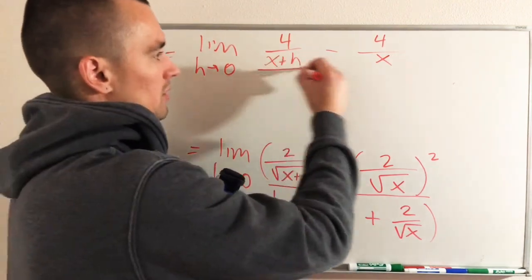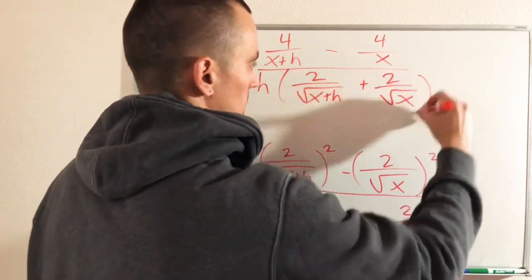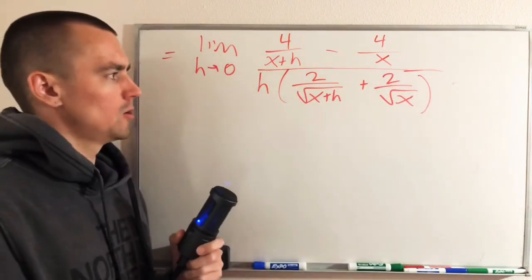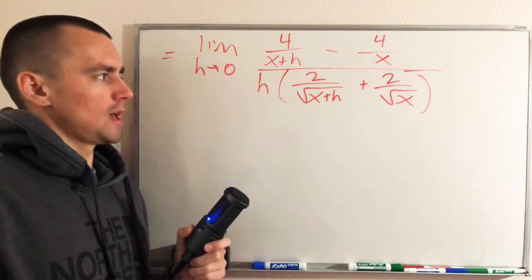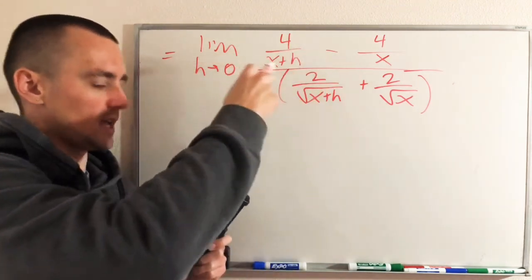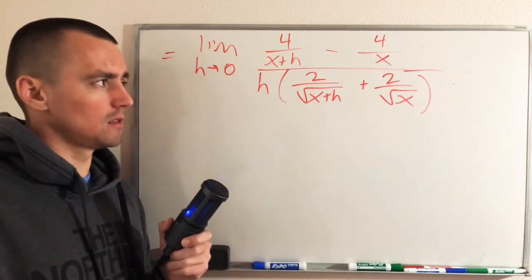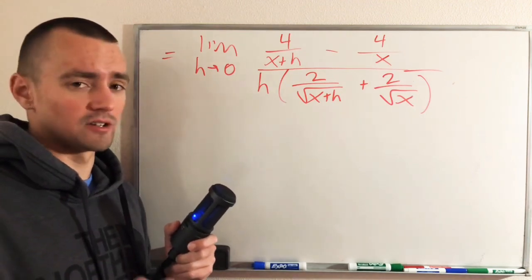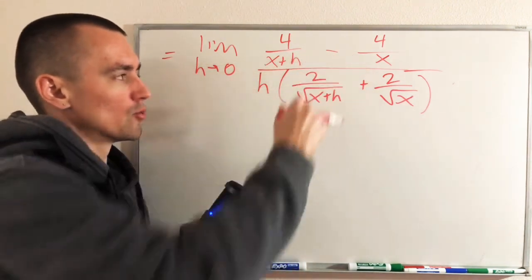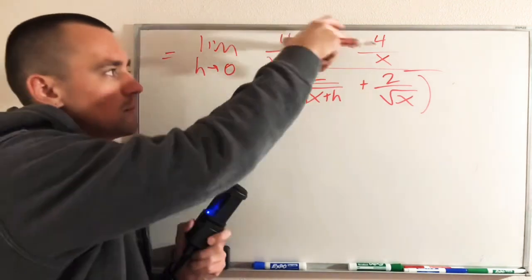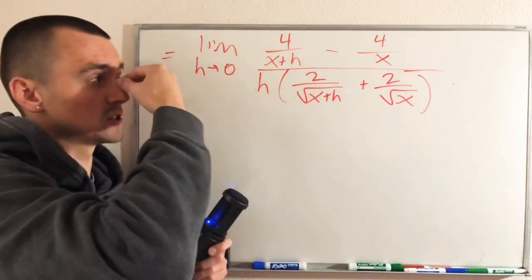Now we have this situation where we have a couple of fractions being added or subtracted in the numerator. Remember, our general goal is to get something that we can pull an h out of our numerator so that it will cancel with this h down here. So usually when you're in a situation like that, the easiest way to get there would be to somehow try and combine these two fractions in the numerator so that you just have basically one big fraction in the numerator. Then you can maybe pull an h out of that to cancel with this h. So let's try doing that.